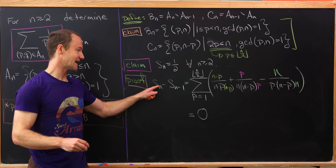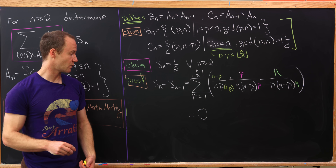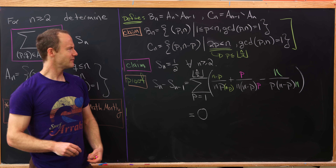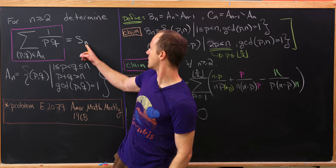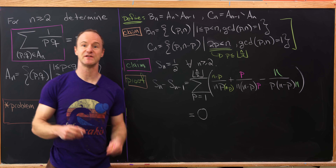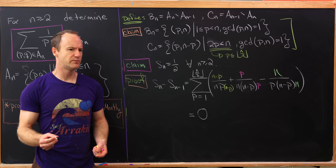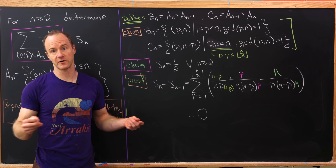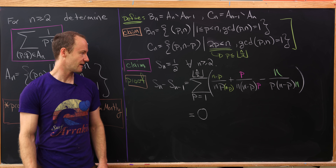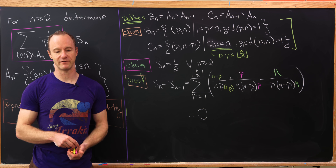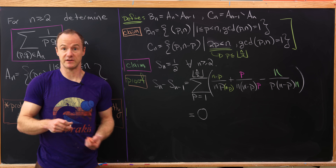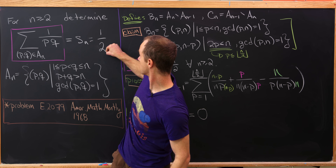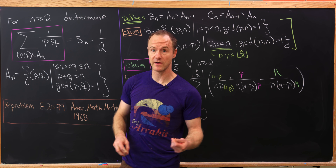So the difference S_N minus S_{N-1} is zero, meaning all the S_N values are equal. Since we saw that the first couple of cases had the value one half, all of them must equal one half. That finishes the proof that all these sums have the value one half.